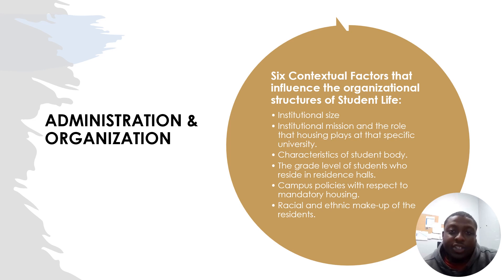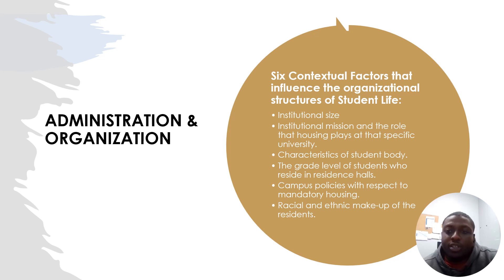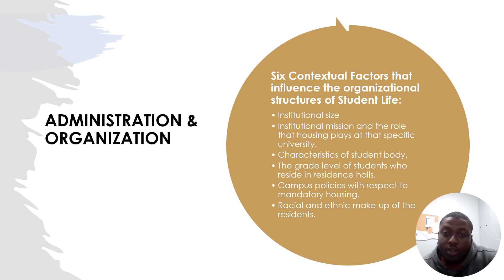Regarding administration and organization: there are six contextual factors that influence the organizational structures of student life. Institutional size — if it's a really big school, there will be a bigger staff with a complex director, multiple residence hall directors, many RAs, and graduate assistants. The institutional mission and the role that housing plays at that specific university — if housing is a huge priority, more funding goes toward it; if the school has many commuters, it's less important. The characteristics of the student body and grade level of residents — many freshmen and sophomores need programs to help them adjust to college. Also, campus policies with respect to mandatory housing and the racial and ethnic makeup of residents.